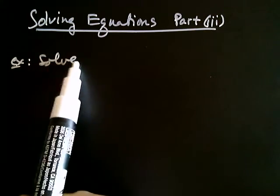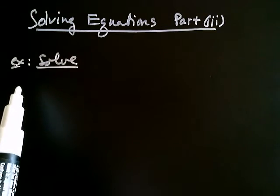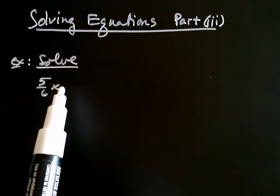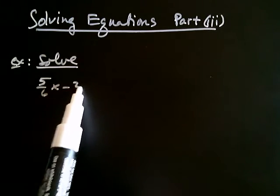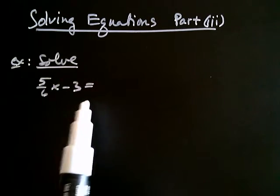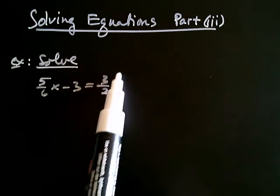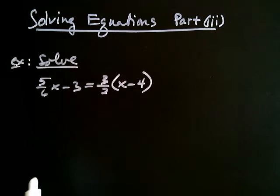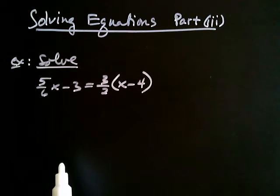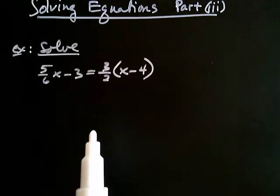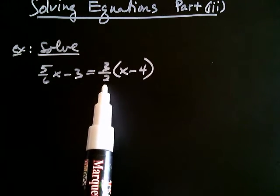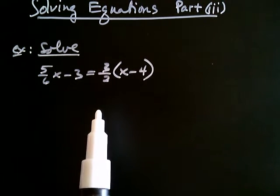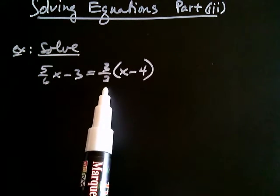Let's solve. I was thinking something like this: 5/6x minus 3 is equal to 3/2 times x minus 4.